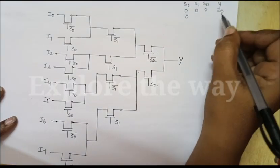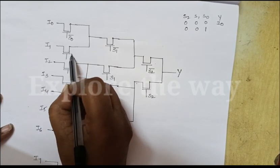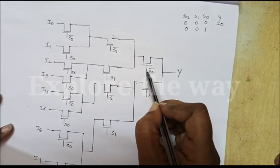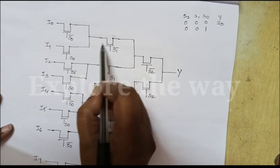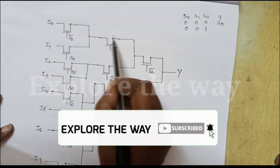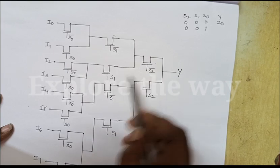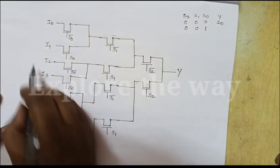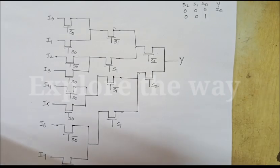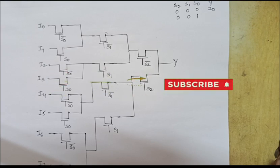When the inputs are 0 0 1, that means S0 is 1 — this transistor will turn on. S1 is 0, this transistor will turn on. S2 is 0, this transistor will turn on. So these three transistors provide a path from I1 to Y, and I1 is routed to the output Y. Similarly, for all remaining combinations, one of the inputs is routed to the output. This is the 8-to-1 multiplexer using NMOS pass transistors. If this video is useful, hit the like button and for any queries or suggestions please write a comment. Thank you.